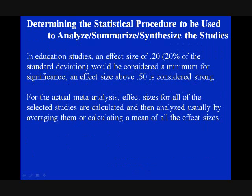In education studies, an effect size of 0.20 — 20% of the standard deviation — would be considered a minimum for significance. An effect size above 0.50 is considered strong. For the actual meta-analysis, effect sizes for all of the selected studies are calculated and then analyzed, usually by averaging them or calculating a mean of all of the effect sizes.